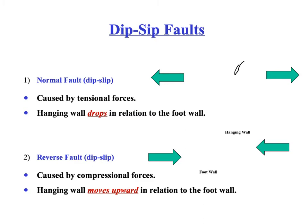To summarize: a normal fault is a dip-slip fault caused by tension, and the hanging wall goes down in relation to the foot wall. For a reverse fault, it's also a dip-slip fault caused by compression, and the hanging wall moves up relative to the foot wall. You'll need practice looking at different types of faults, figuring out the hanging wall and foot wall, and then deciding if the hanging wall is going up or down to determine what type of fault it is.